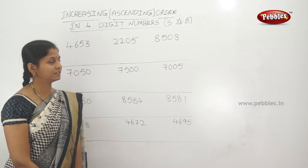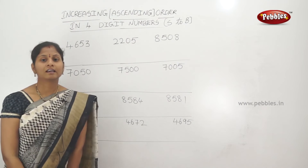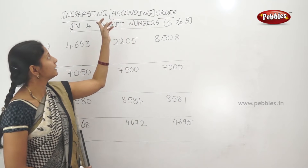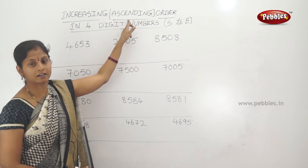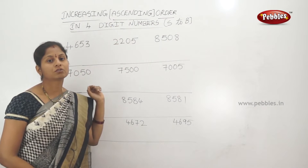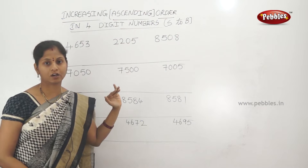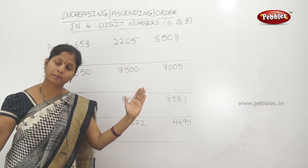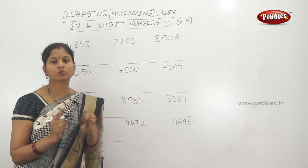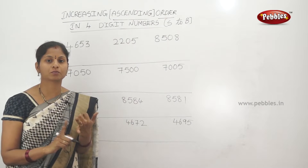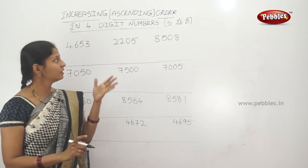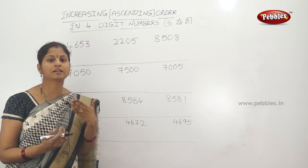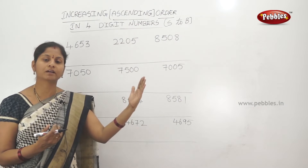Increasing order in 4-digit numbers, also called ascending order. In increasing or ascending order, we take the smallest number and place it before the biggest number. We will follow the same method used for 2-digit and 3-digit numbers — comparing from smallest to bigger number.